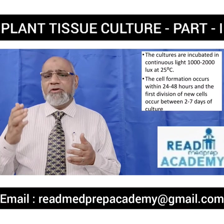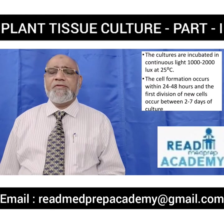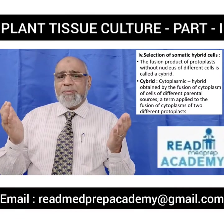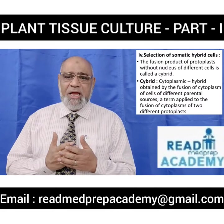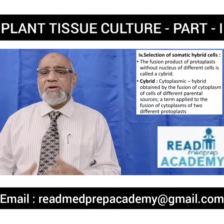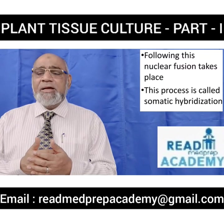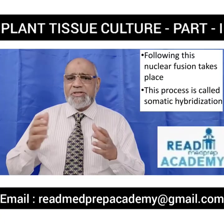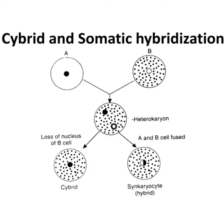The fusion product of protoplasts without nuclear fusion of different cells is called a cybrid — a cytoplasmic hybrid obtained by fusion of the cytoplasm of cells from different parental sources. Following this, nuclear fusion takes place, forming a cell with fused cytoplasm and nucleus; this process is called somatic hybridization and results in formation of a new hybrid. A synkaryocyte is the hybrid formed by somatic hybridization involving fusion of both cytoplasm and nucleus.